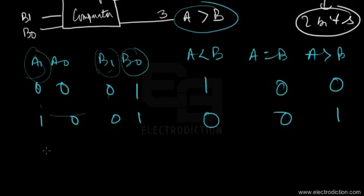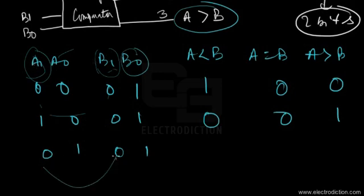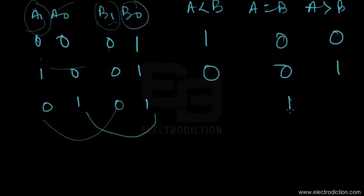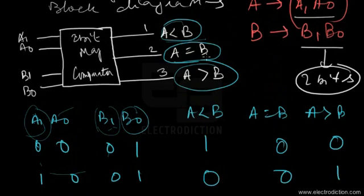To sum up with a third case, let's say both numbers are 01. Here both the MSBs and LSBs are equal for A and B: A1 equals B1 and A0 equals B0 in magnitude. Therefore, the condition A equals B is satisfied, giving a logic one output at terminal two, while the rest remain at logic zero.